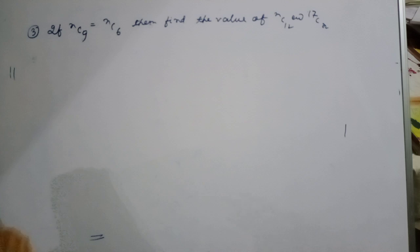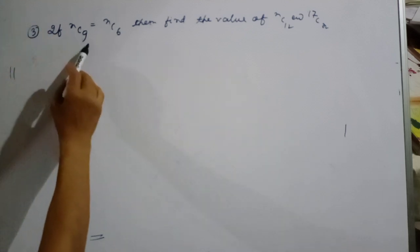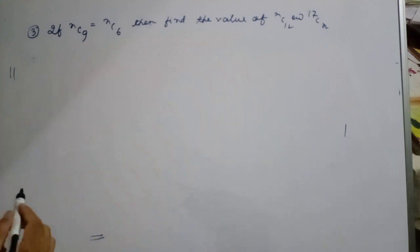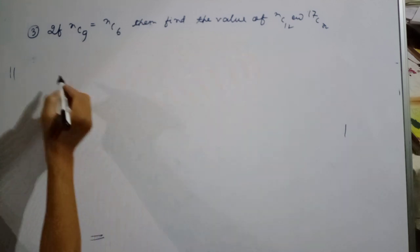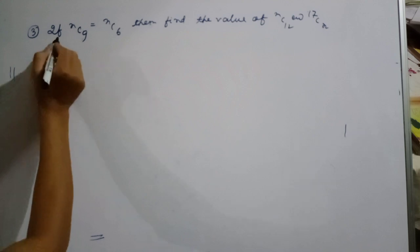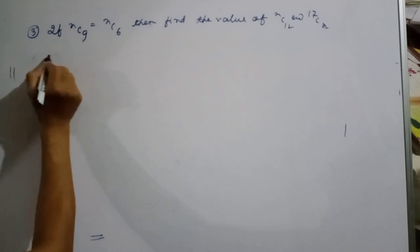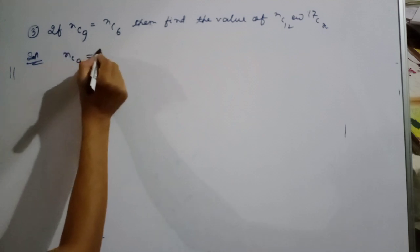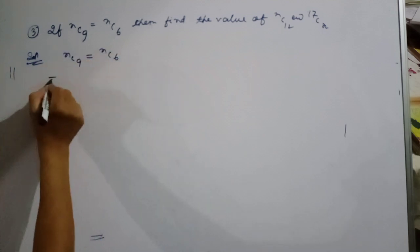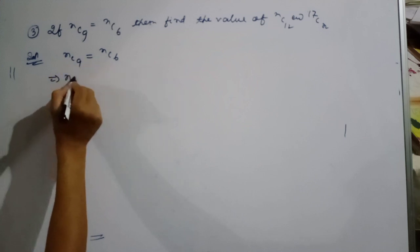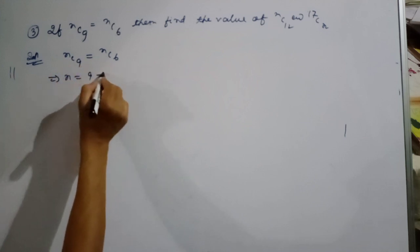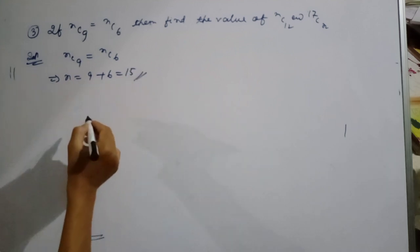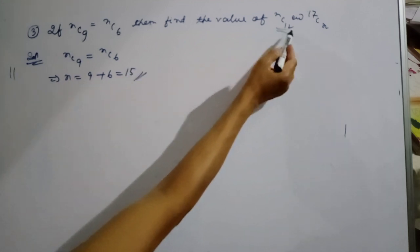Question number 3: If nC9 equals nC6, then find the value of nC12 and 17Cn. Since nC9 equals nC6, n equals 9 plus 6, which is equal to 15.